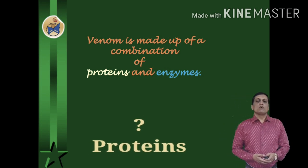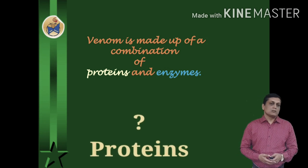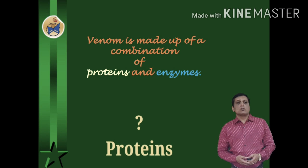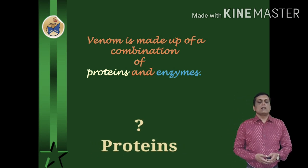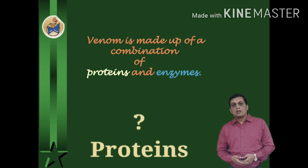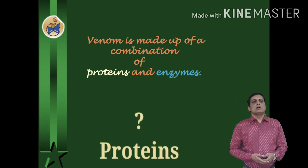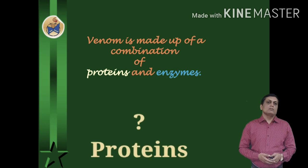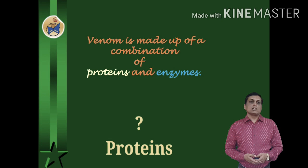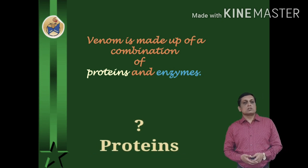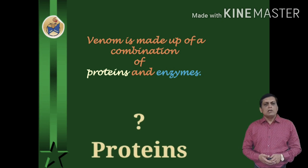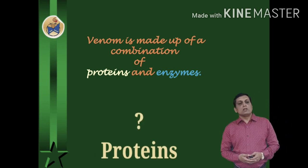Venom is made up of a combination of proteins and enzymes. Proteins constitute about 90–95% of venom's dry weight and are responsible for almost all of its biological effects. Among hundreds, even thousands of proteins found in venoms, there are toxins, neurotoxins in particular, as well as non-toxic proteins which also have pharmacological properties, and many enzymes, especially hydrolytic ones.